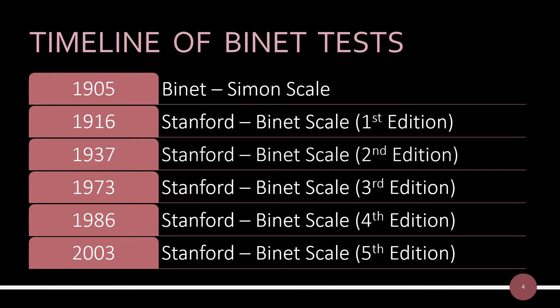In the year 1905, Binet and his student Theophile Simon developed the Binet-Simon scale to meet the government's request. This test consisted of 30 questions. The Binet tests have been revised a number of times, and these revisions are called Stanford-Binet tests because the revisions were made at Stanford University.